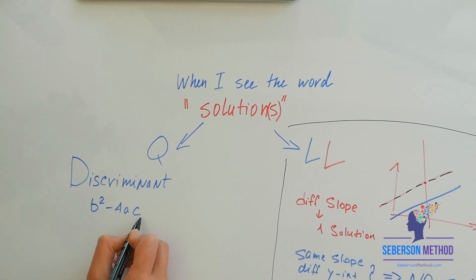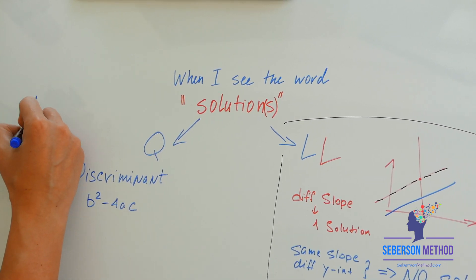Discriminant is a part of your quadratic formula and it's b squared minus 4ac. You can get your b, you can get your a, or your c from your standard form of a quadratic.